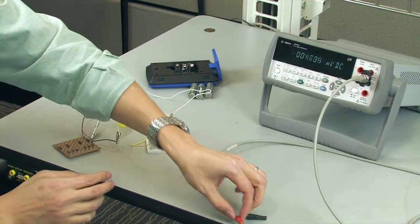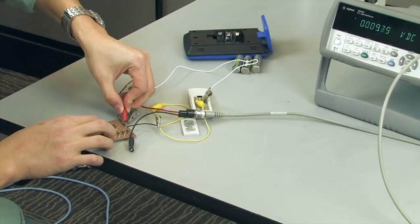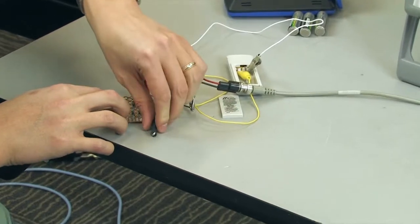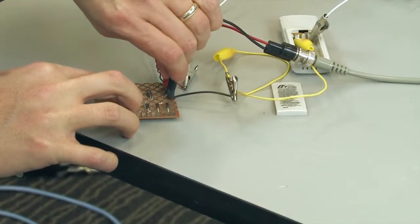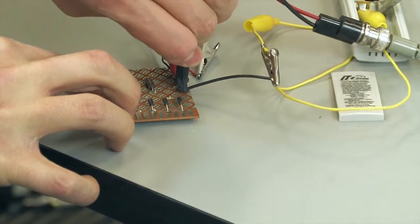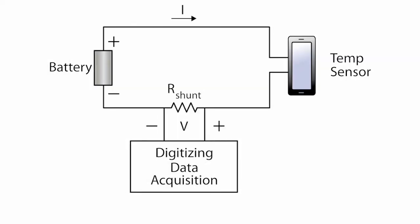The key challenges in this current profile measurement are being able to: 1. Accurately measure the very low-level sleep state current in the presence of high-level peaks of transmit state current. And, 2. Accurately measure the timing relationships and durations of the two states.